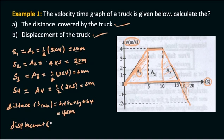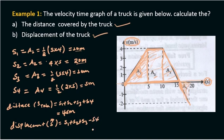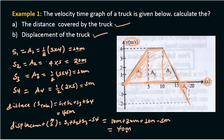Displacement is the direction of the distance. The displacement is equal to S1 plus S2 plus S3 minus S4, where S4 is negative. That gives 10m plus 20m plus 10m minus 5m, resulting in a displacement of 35 meters. Displacement has both magnitude and direction.